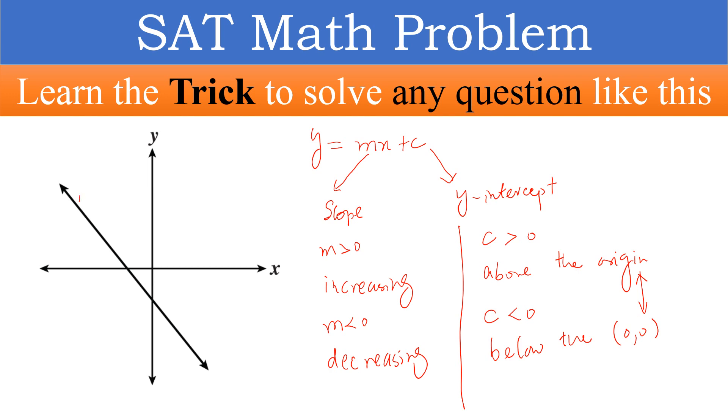Now, look at this line. If this line is l, in this line, the slope is less than 0 because it is decreasing. And it is below the origin. So, the intercept is also less than 0.